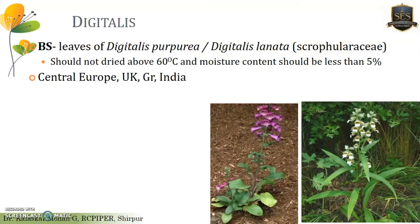Now we are going to discuss the first drug, which is Digitalis. Digitalis is a drug derived from Digitalis purpurea or Digitalis lanata, belonging to the family Scrophulariaceae. To be known as a drug with specific therapeutic activity, Digitalis should not be dried above 60 degrees Celsius and moisture content in the final product should not exceed 5%.